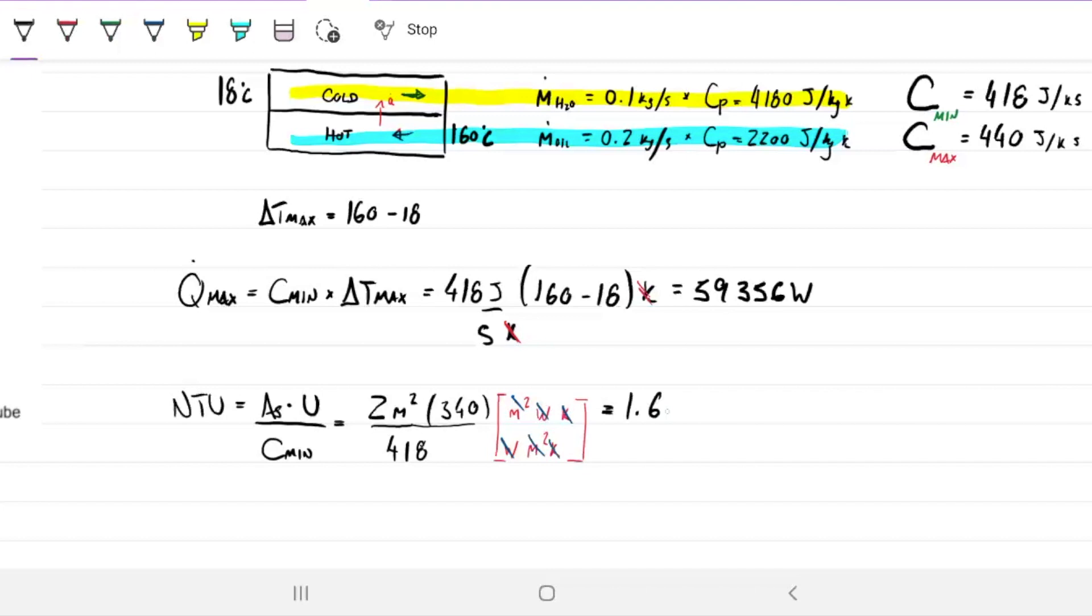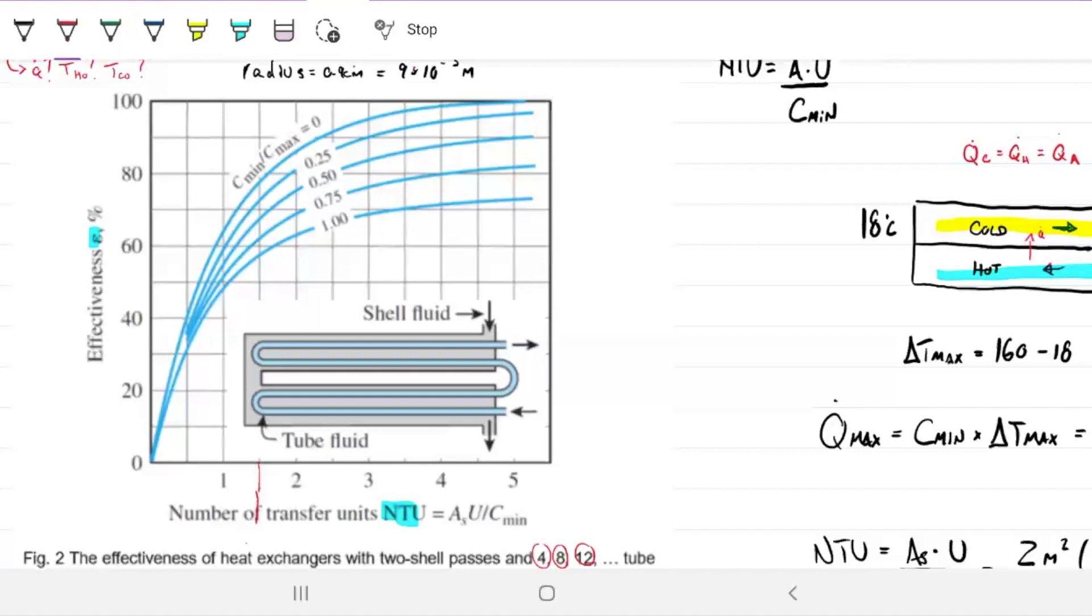The max power of the exchanger is 59,356 watts. How are we going to find effectiveness? This area times U is the overall coefficient. U is given to be 340, area is 2 meters squared.